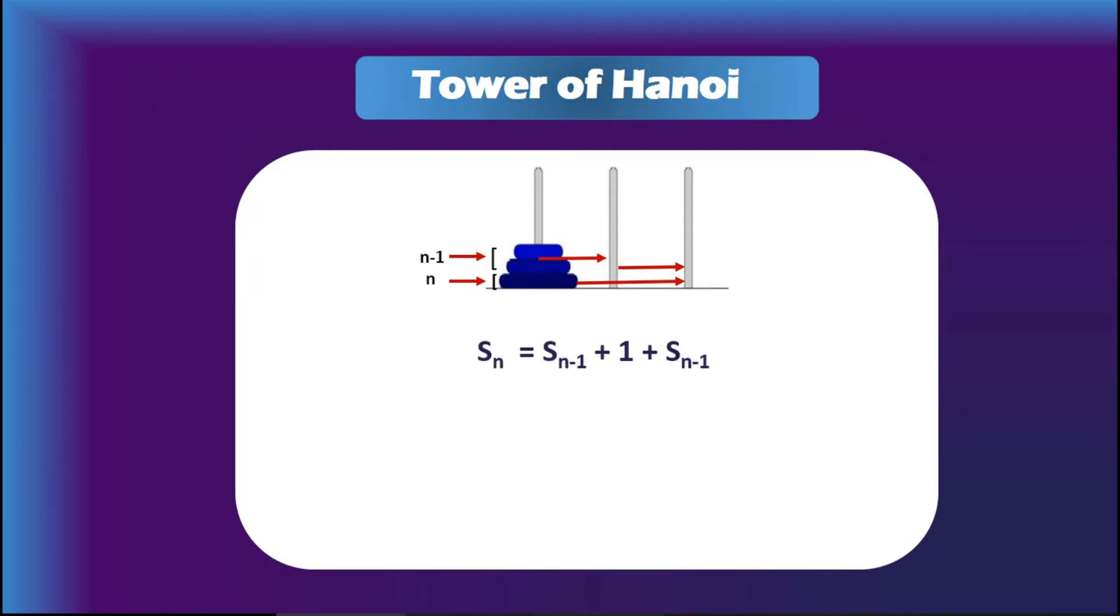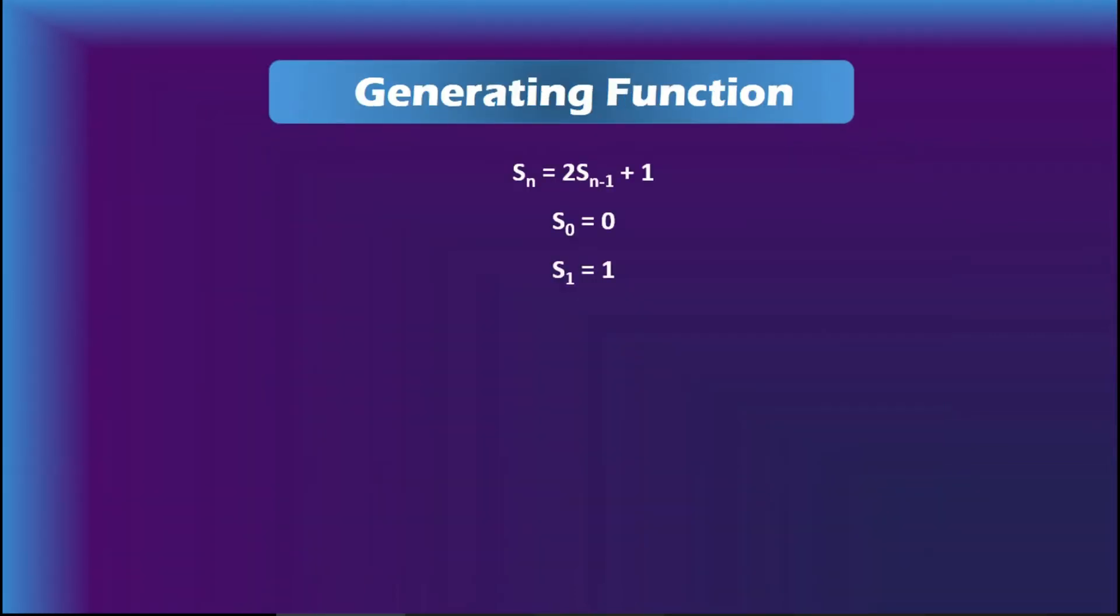From this we can get s_n, which is the total amount of moves to shift all the discs from first rod to third rod. By simplifying, we get 2s_{n-1} plus 1. Here, if we have to move just one disc, then we can easily say the number of moves will be 1. And if we don't have to move any, it is of course the initial condition will be 0. So from that we can say s_0 equals 0 and s_1 equals 1.